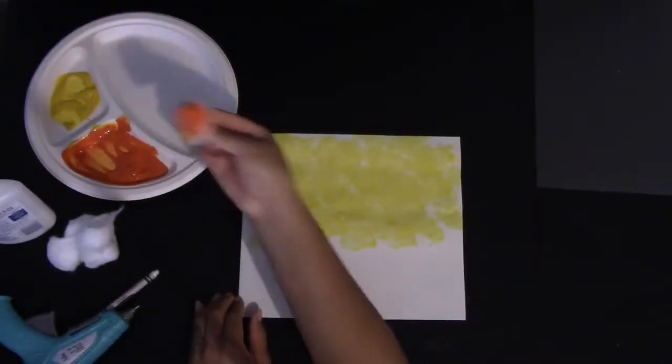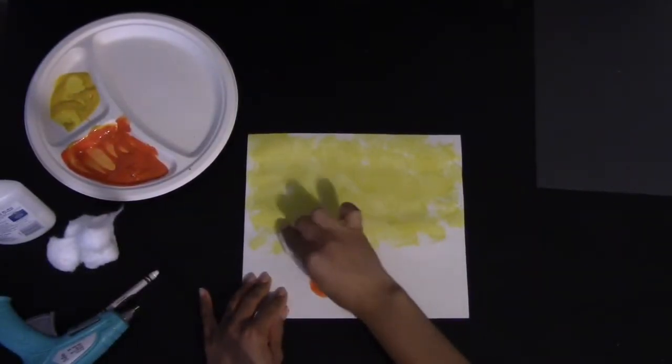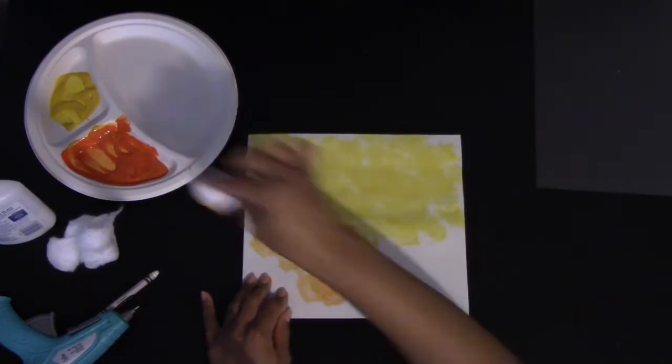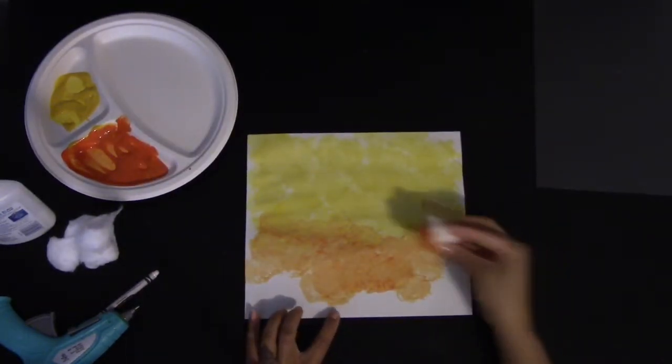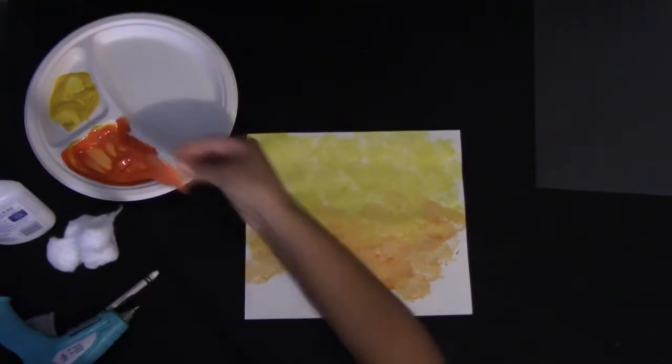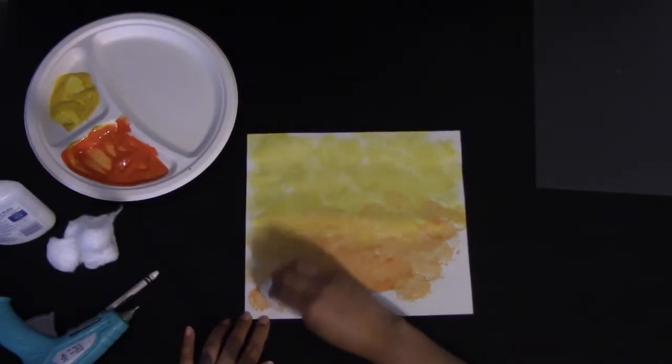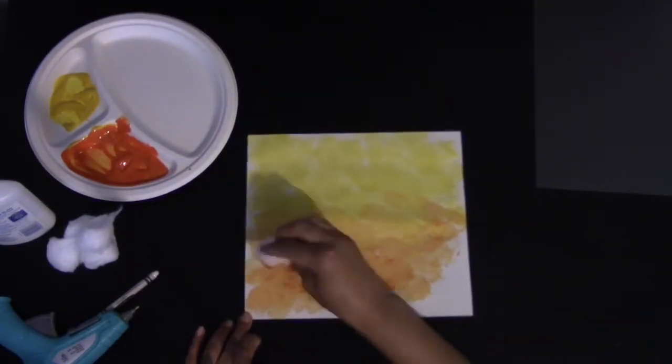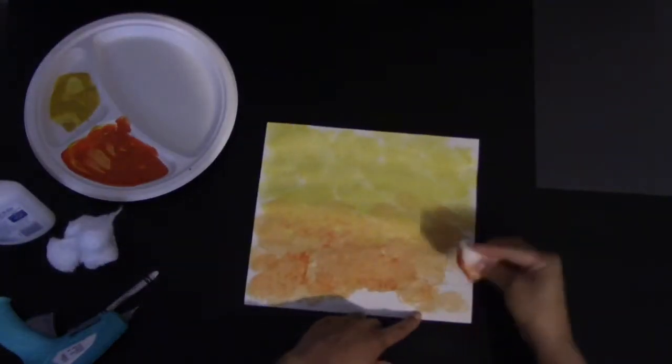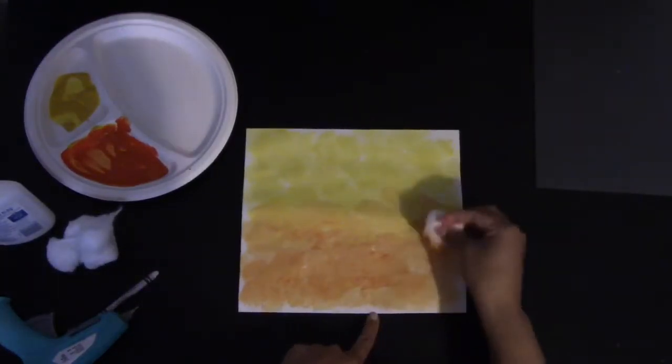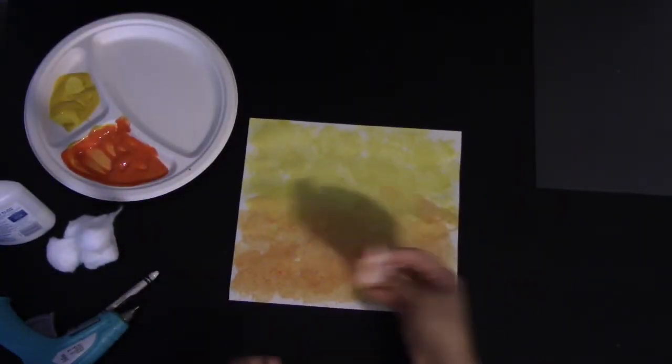After you complete the yellow you're going to do the bottom half and work with the orange. After you worked on the orange it should look like this. They should be blended well.